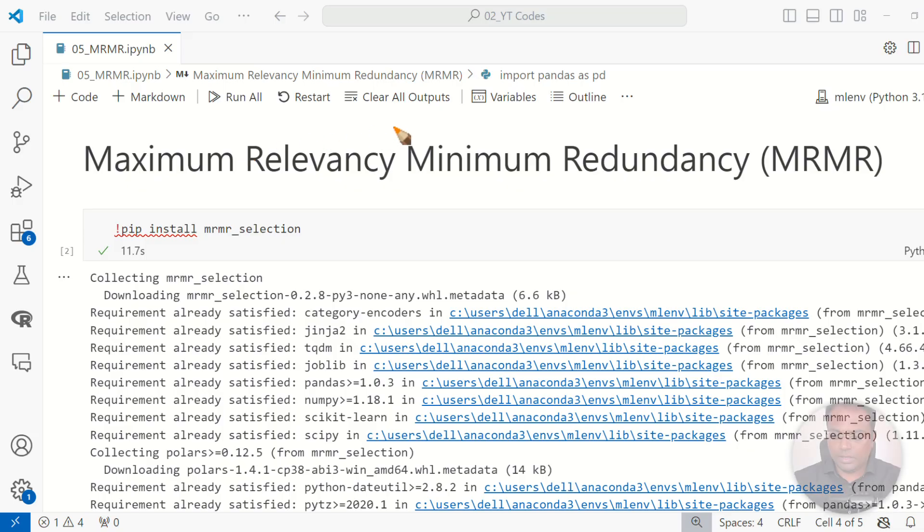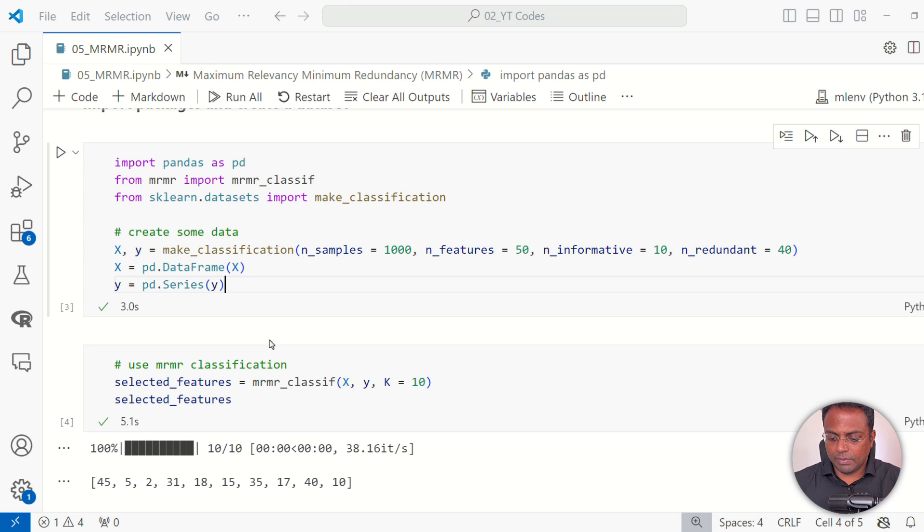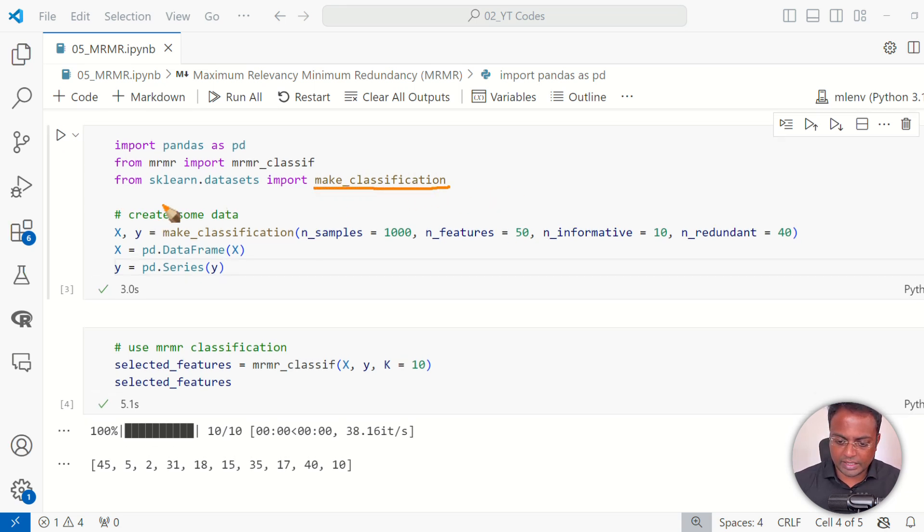Let's also quickly look at the implementation. To implement it in Python is quite simple. We have a package called MRMRSelection. Pip install this package. Once this is installed, we are going to do a simple example. We are going to create a dataset using the make classification method inside scikit-learn datasets. This will create X and Y. There are 1000 samples, 50 features. Out of the 50 features, 10 features are informative, 40 features are redundant features. Once these are created, just pass in the feature set, Y, and the total number of features that you want to select, 10 in this case, to MRMR.